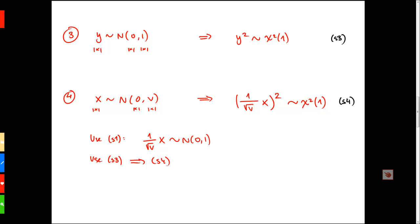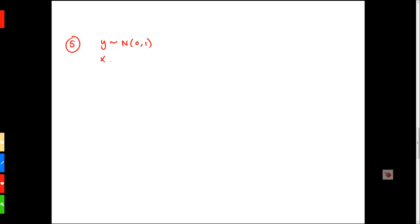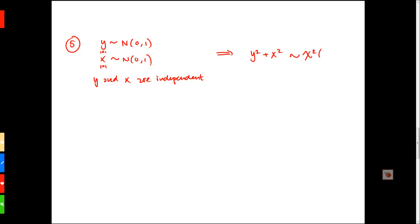Now assume that both y and x are standard normally distributed scalars, and additionally assume that y and x are independent. If that is the case, then y squared plus x squared will be chi-square distributed with 2 degrees of freedom.